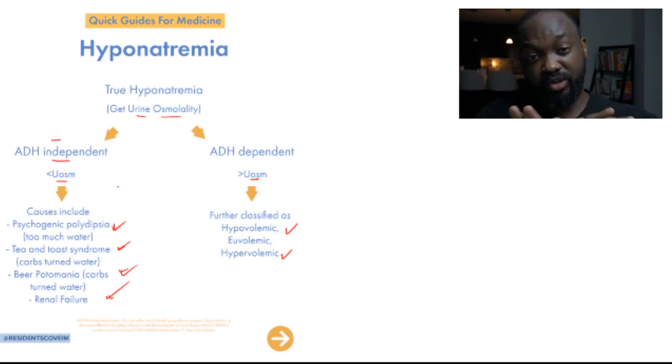When you don't have ADH, nothing is there to do that. Whatever water is in the serum eventually ends up in the urine, and because of that, you'll have dilute urine, and that's decreased urine osmolality. So we get serum osmolality first to tell us it is true hyponatremia when we get a hypotonic hyponatremia. Then we get urine osmolality to tell us whether it's ADH dependent or ADH independent.